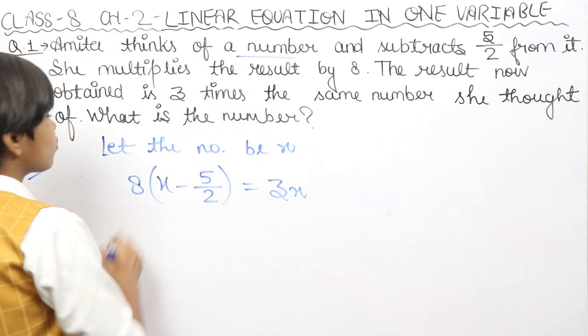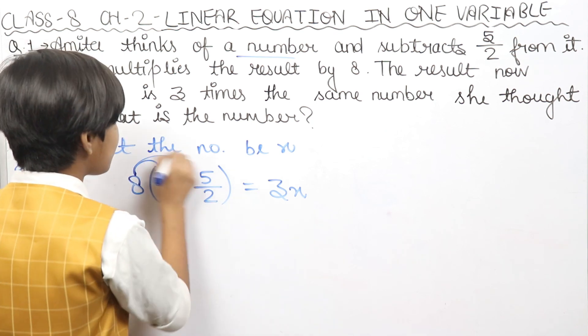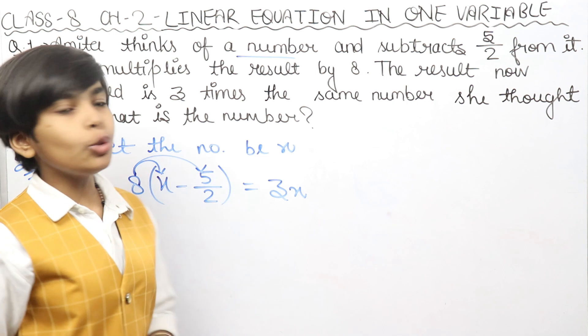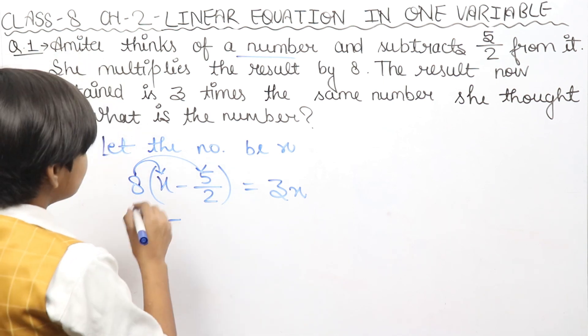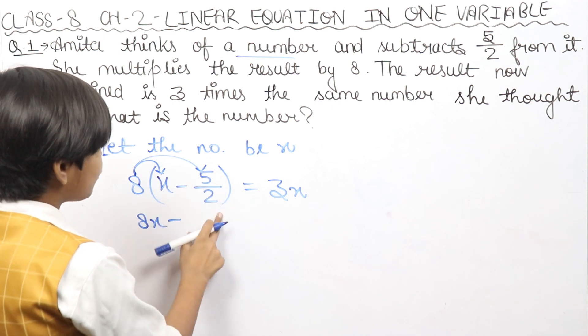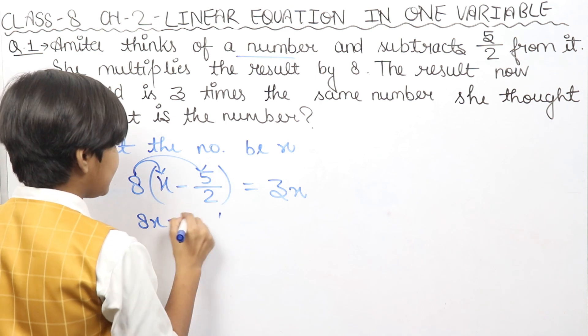We will solve this equation. The distributive property will be 8 times x and 8 times 5 upon 2. So 8x minus 8 times 5 upon 2. We will cut here, this is 4 and this is 4, so 8 times 5 is 20.